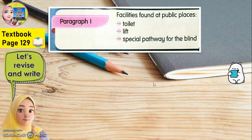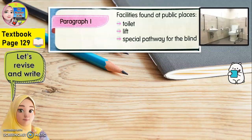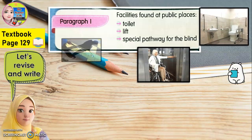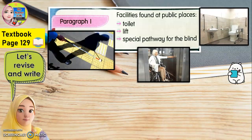You don't need to write the introduction because it's been made for you. Kamu tak perlu buat introduction sebab dah dibuatkan. So we just continue straight away to paragraph 1. Kita terus ke perenggan pertama. We have facilities found at public places such as toilet, lift, and special pathway for the blind.